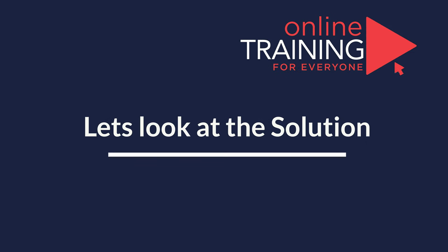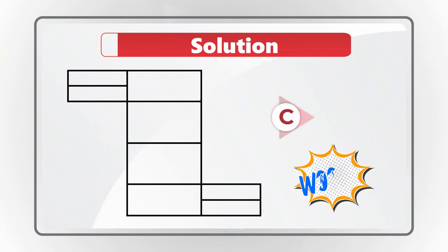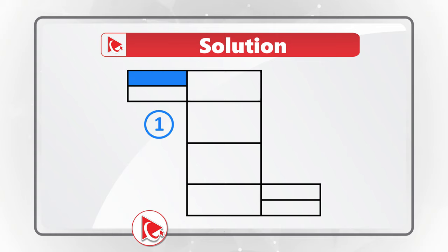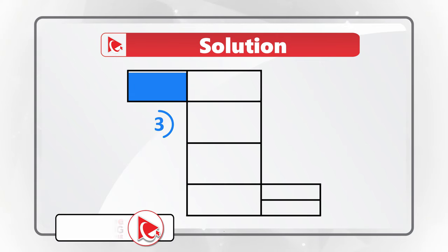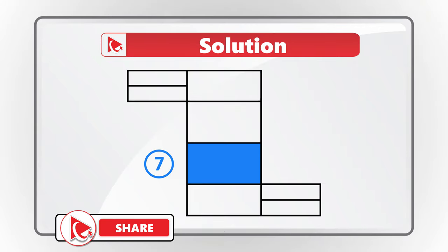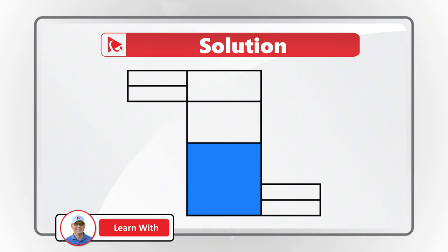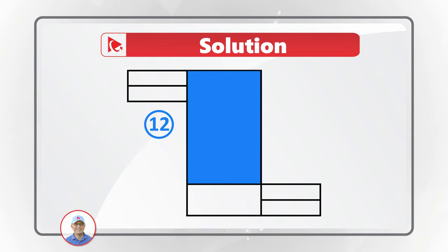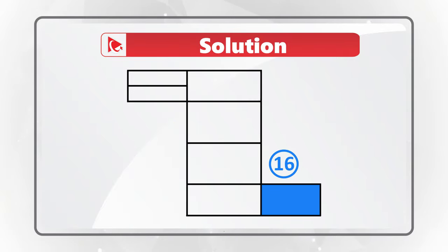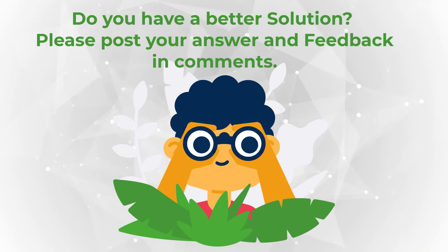Ready? Let's move forward. I counted 18 rectangles in this shape. Let me show them all to you: one, two, three, four, five, six, seven, eight, nine, ten, eleven, twelve, thirteen, fourteen, fifteen, sixteen, seventeen, and eighteen. If you see a different number, please make sure to post in comments.